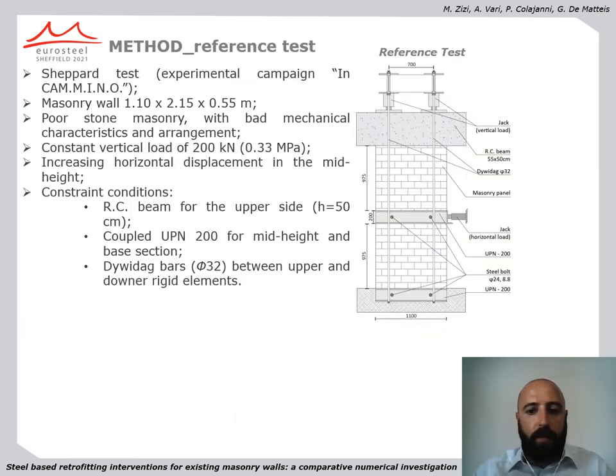The experimental test adopted as a reference for the present study was performed within the experimental campaign in CAM and consisted of an experimental Sheppard test on an existing masonry wall. In particular, under the condition of constant vertical load, the panel was pushed by increasing horizontal displacements in the mid-height section until its failure.